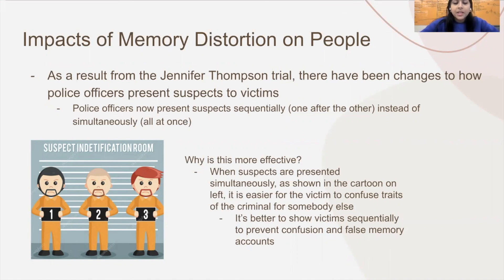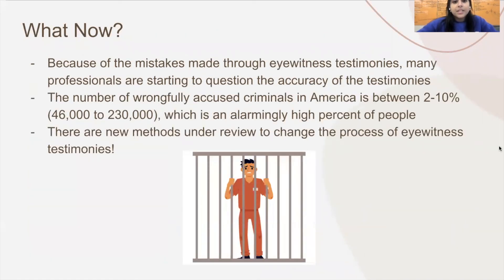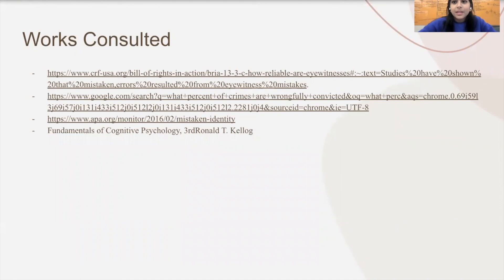Regarding the impacts of memory distortion on people: as a result of the Jennifer Thompson trial, there have been changes to how police officers present suspects to victims. Police officers now present suspects sequentially — one after the other — instead of simultaneously, which means all at once. This is more effective because when suspects are presented simultaneously, it is easier for victims to confuse traits of the criminal with someone else; sequential presentation helps prevent confusion and false memory accounts. Because of mistakes made through eyewitness testimonies, many professionals are starting to question the accuracy of these testimonies. The number of wrongfully accused individuals in America is estimated at between 2 to 10%, which is around 46,000 to 230,000 people — an alarmingly high number — and new methods are under review to change the process of eyewitness testimonies.